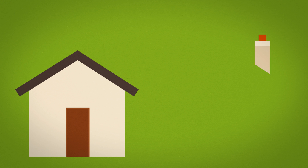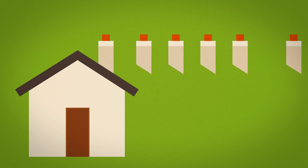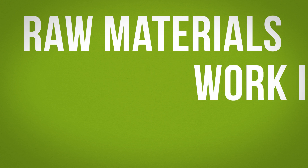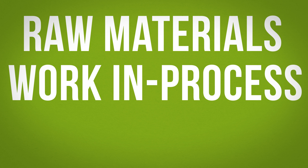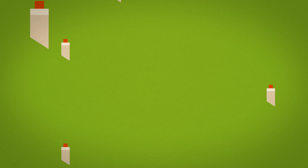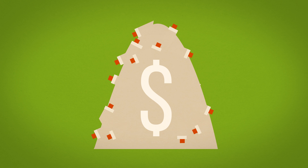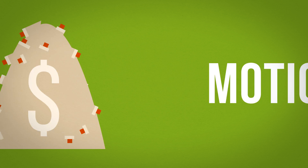The second waste is inventory: supply in excess of what is required. Inventory includes raw materials, work in process, and finished goods. Excess inventory can quickly build up and tie up dollars and resources due to the additional handling and space needed.